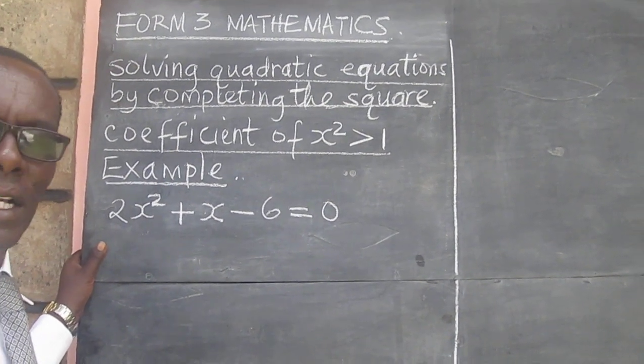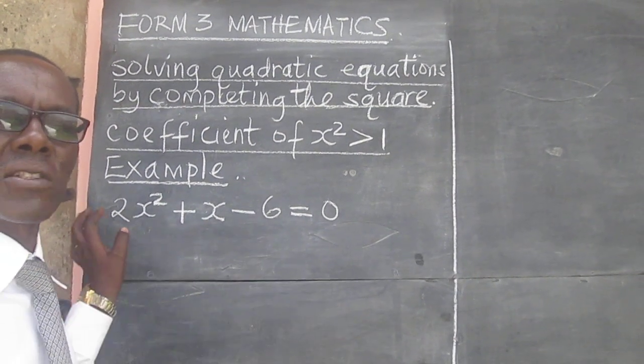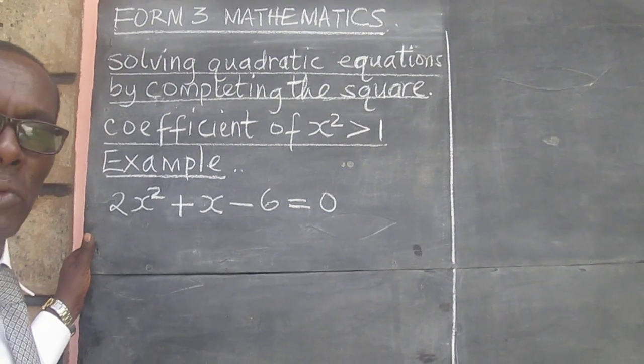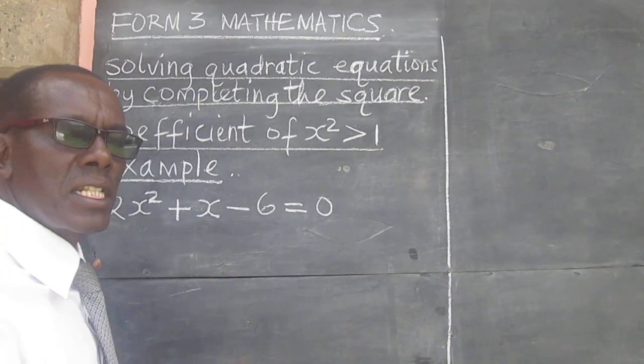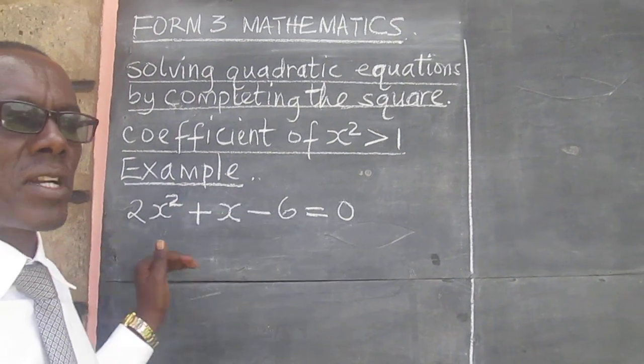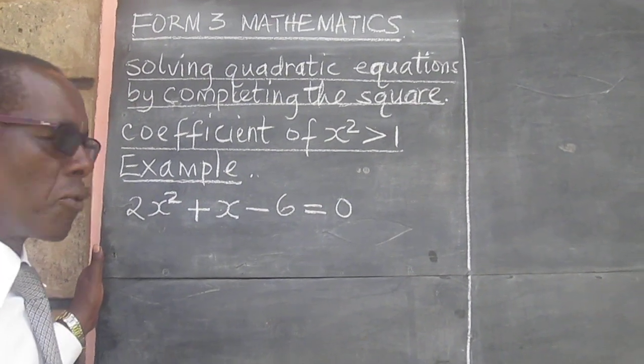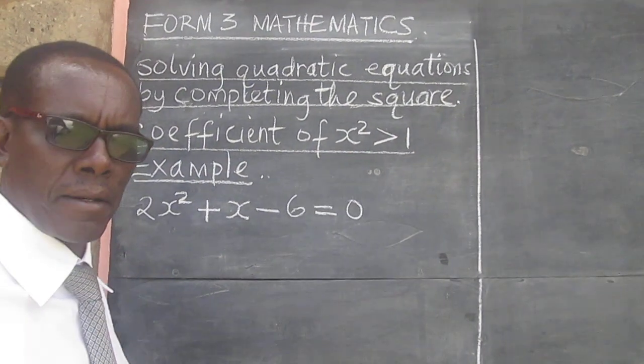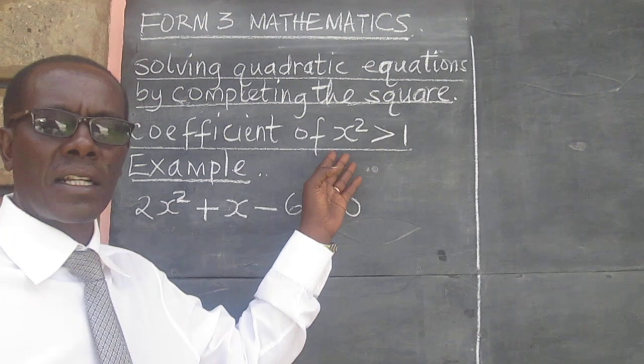This class is a continuation of the last one where we looked at completing the square. And today we want to look at how we can use completing the square method to solve quadratic equations with the coefficient of x² greater than 1, or like we say, greater than unity.